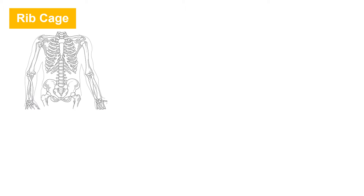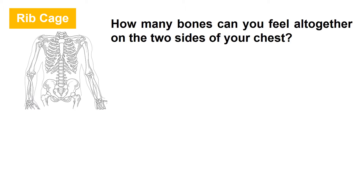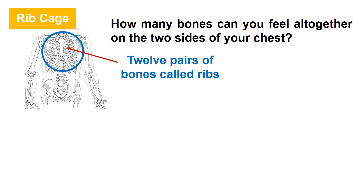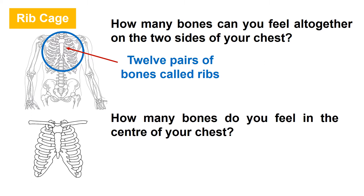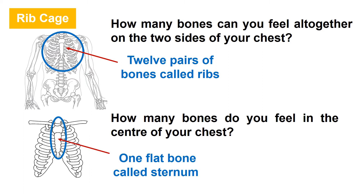Feel the left and right sides of your chest with your hand or finger. How many bones can you feel altogether on the two sides? There are 12 pairs of flat bones, which we call ribs. Now check the center of your chest — there is one vertical flat bone called the sternum. The cage-like structure in the chest is called the rib cage. These 25 bones form the rib cage, joined to the spine at the back.